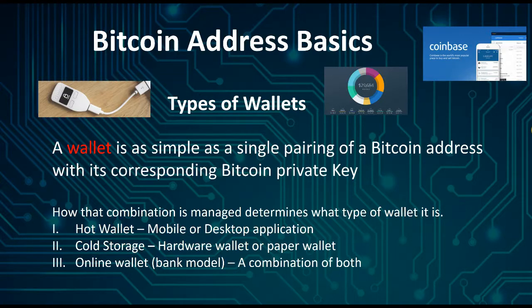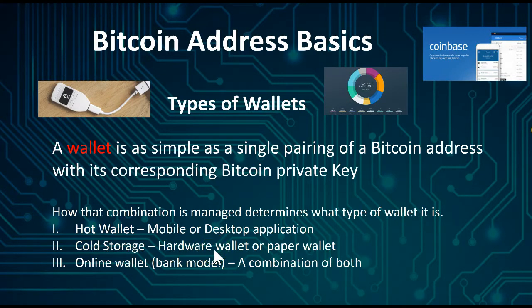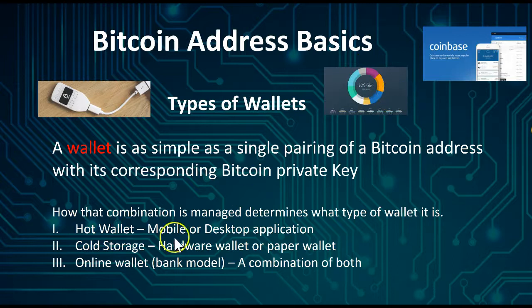You see that white one over here — this is a Trezor wallet. There's Trezor, there's Ledger Nano wallet, and those are what we call cold storage hardware wallets. A paper wallet is also in that category. And then we have what we call a hot wallet — it's a desktop application, only works on desktop.